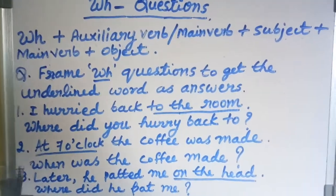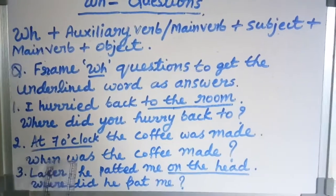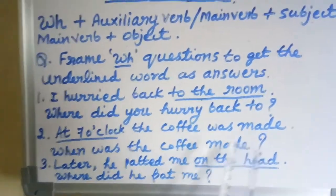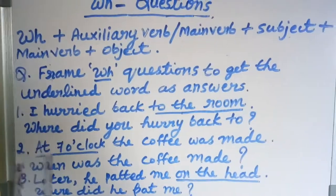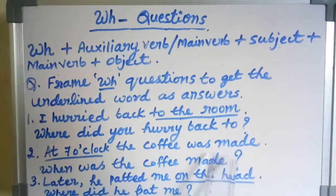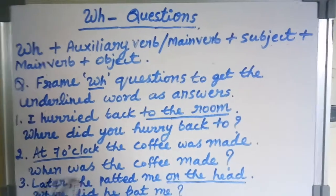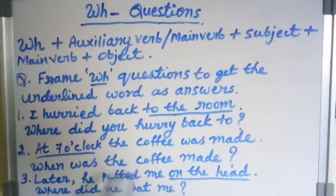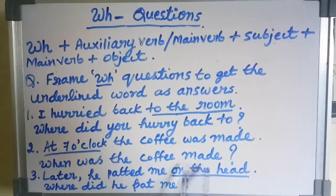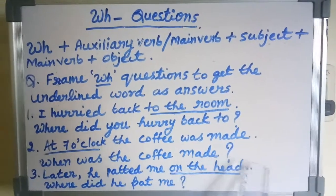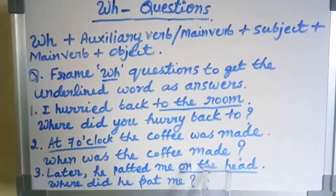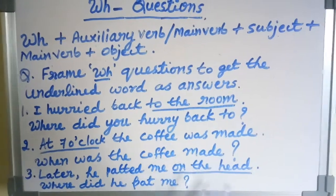Next example: 'At 7 o'clock, the coffee was made.' Here the underlined word is 'at 7 o'clock.' See the formula — WH word, then auxiliary verb 'was,' then subject, then main verb. The answer is: 'When was the coffee made?' Don't forget to write the question mark.